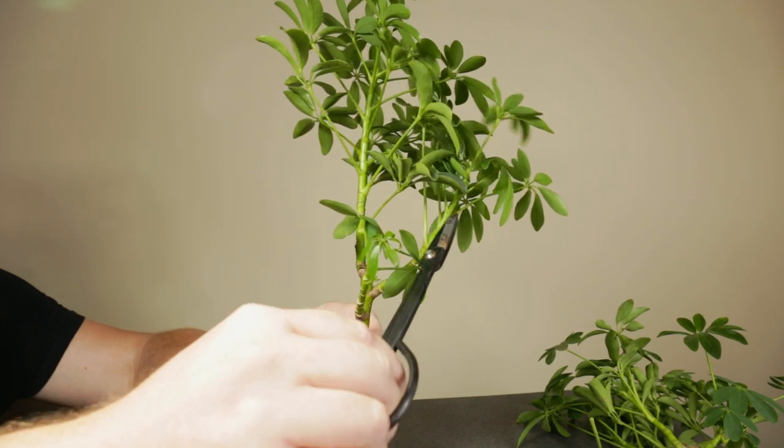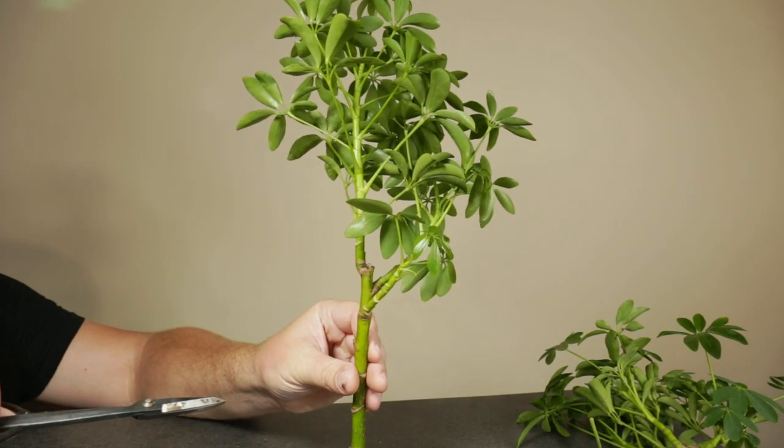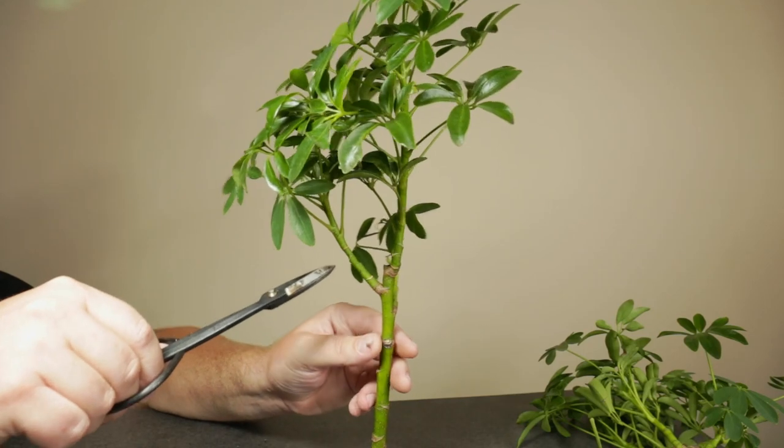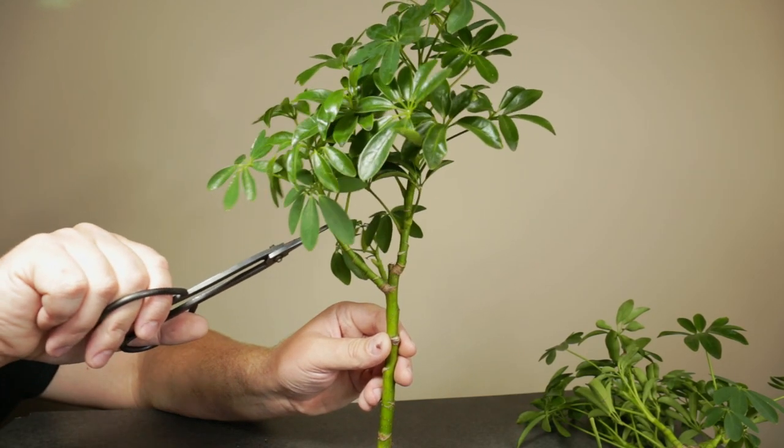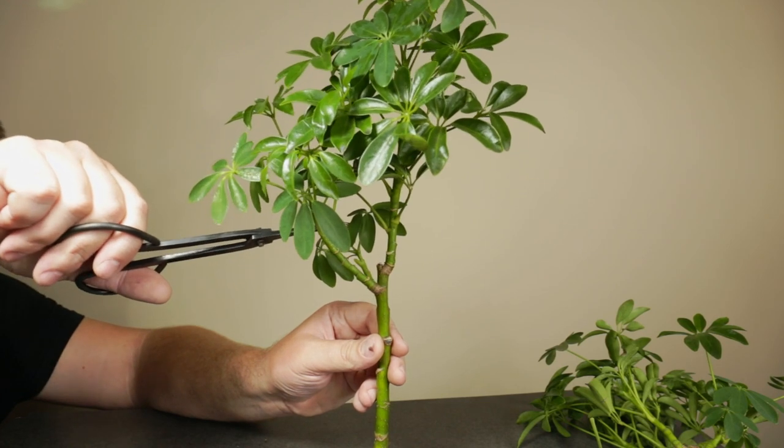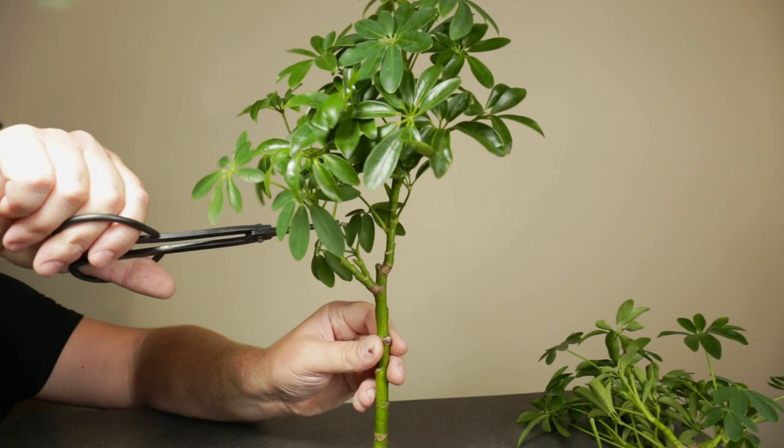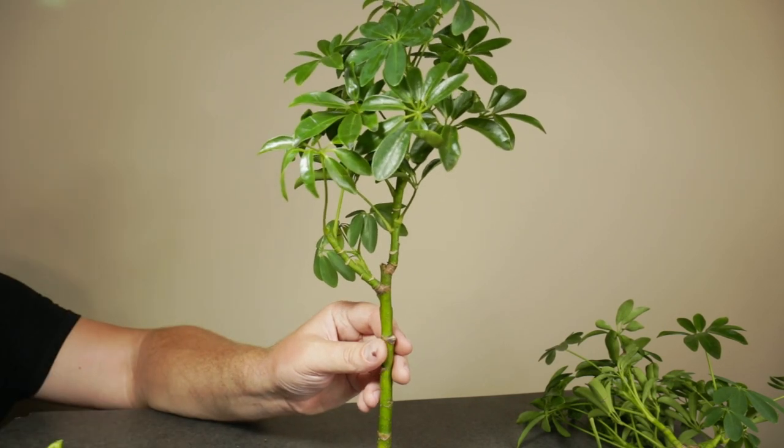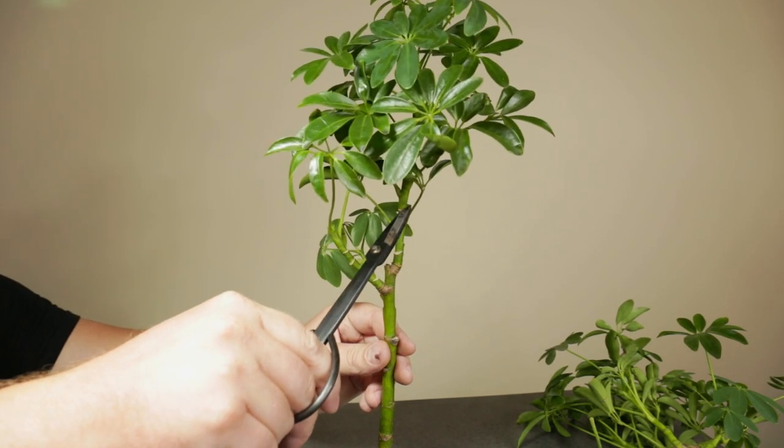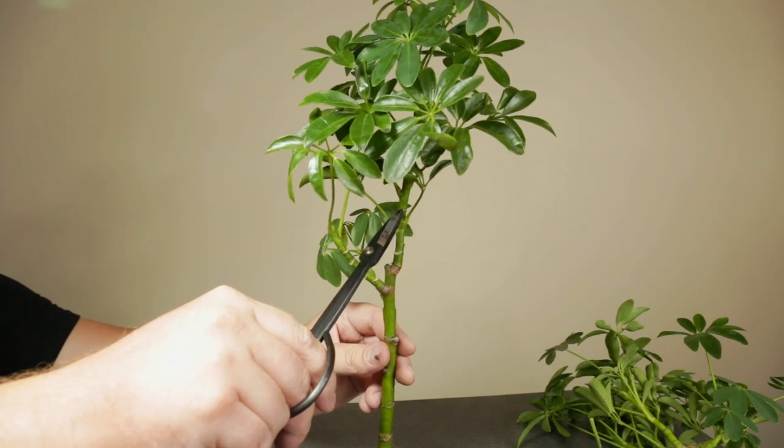I'm going to reduce the length of the two longest branches to equalize the vigor. Each branch will be cut back to an existing leaf, using directional pruning to direct new growth toward the outside of the canopy. So I'm reducing this branch back to this outward-facing leaf here. And on the second branch, I leave this as my last leaf node and make the cut somewhere around here.